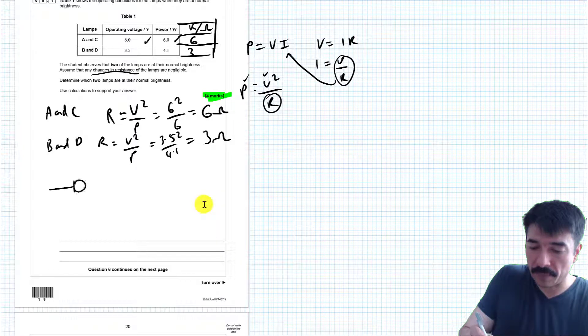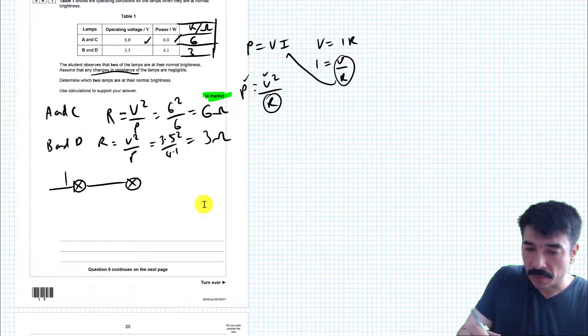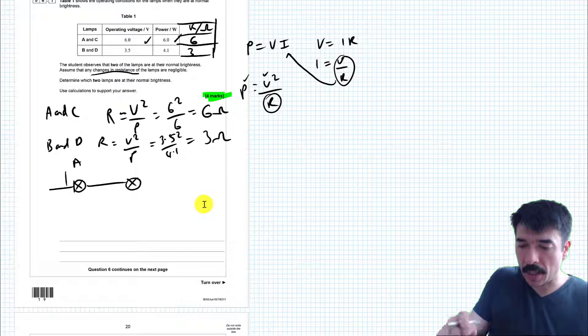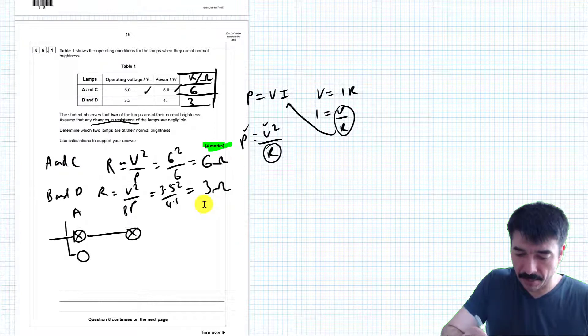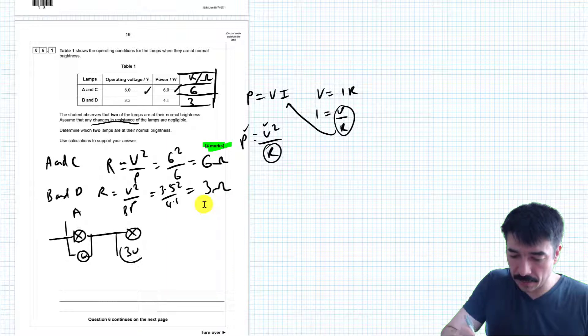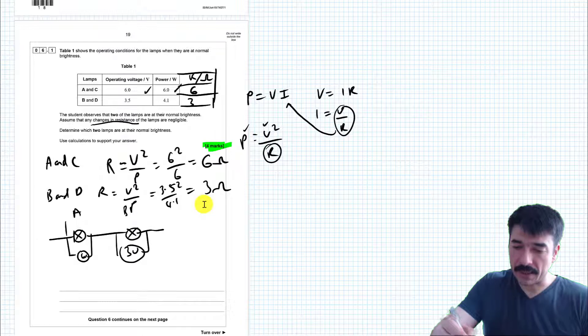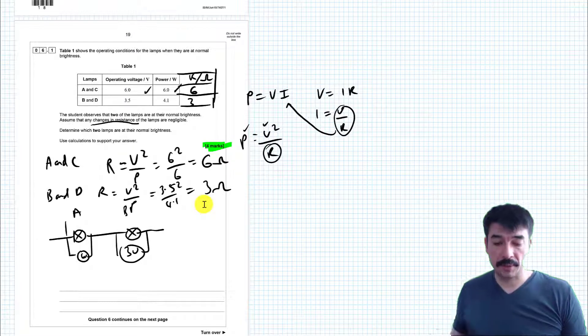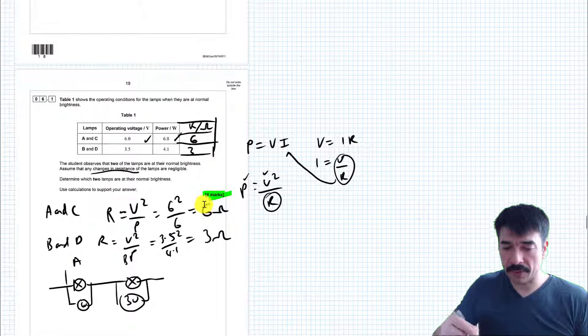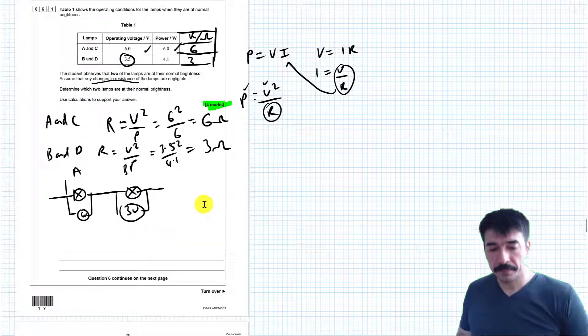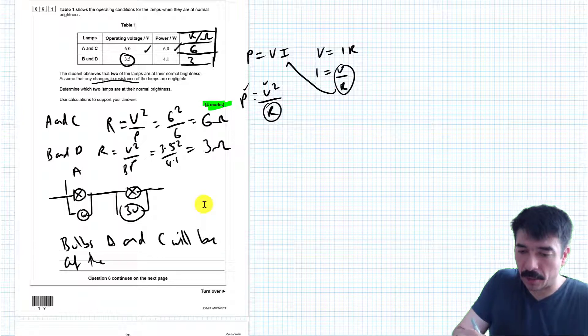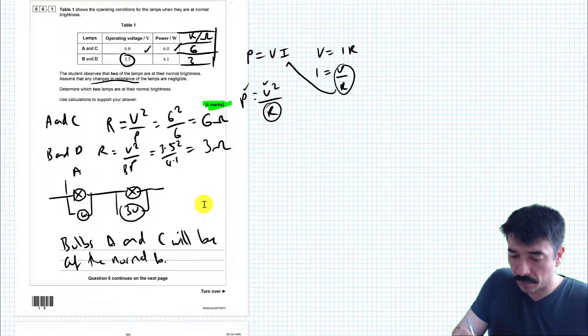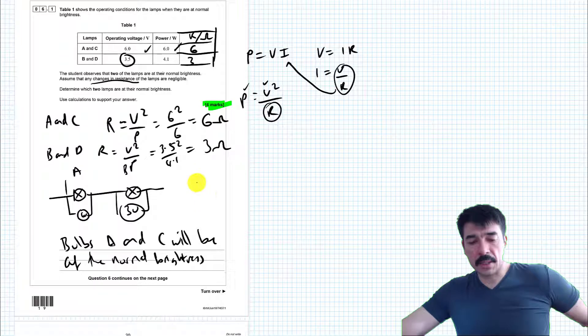So in the circuit, you have bulb A and bulb B. And across bulb A we have 6 volts and 3 volts respectively. So let's have a look. Bulb A is at 6 volts, so it will have the right amount of current flowing through it to be at the right power. Bulb B is at 3 volts, but it should be at 3.5. So only bulbs A and C will be at the normal brightness. So let's carry on.